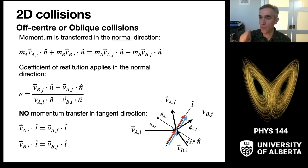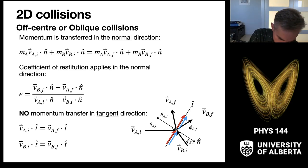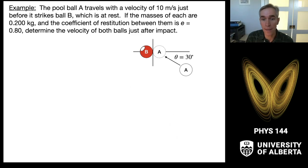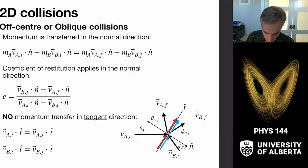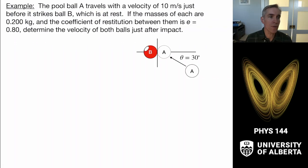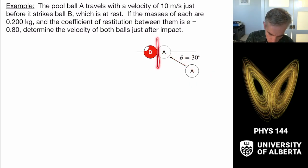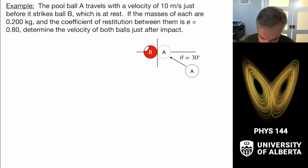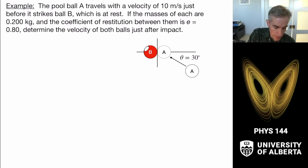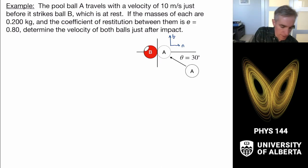Let's look at two examples — one intermediate and one advanced. The intermediate collision describes a pool ball A traveling at 10 meters per second, colliding with ball B, and then they fly off. We want to find the velocity of both balls just after impact. Ball A is coming in at an angle of 30 degrees with respect to the plane of collision, setting up a normal-tangential coordinate system with a normal direction and a tangent direction.